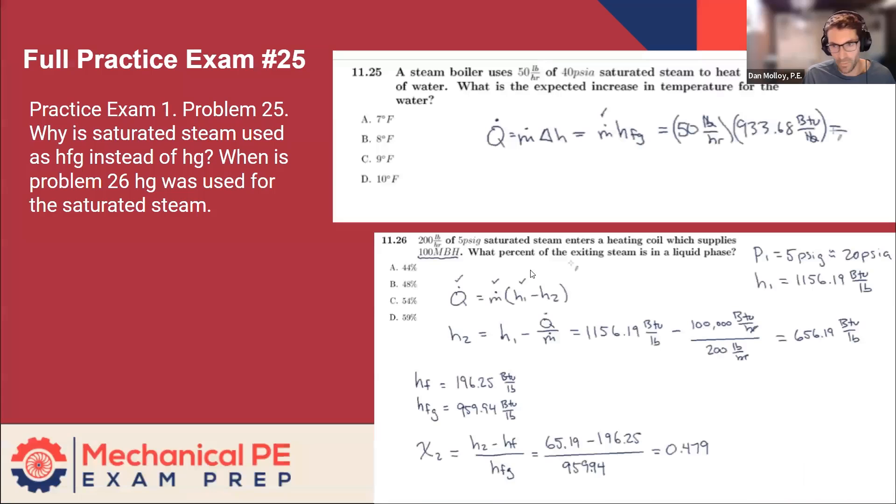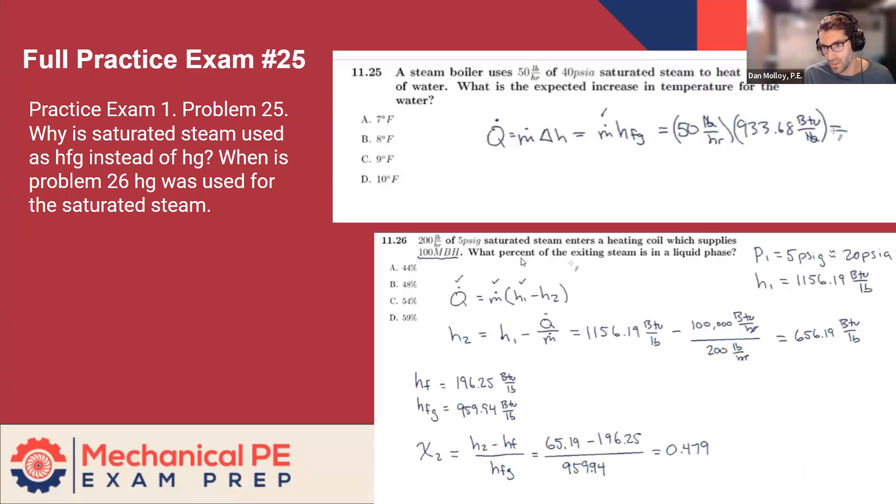So why isn't that the case in the other problem that you mentioned? The other problem is a steam heating coil. And on this one, we have a mass flow rate and a pressure, and we know the rate at which energy is being supplied. So because we know Q dot in this problem, in the first problem we didn't know Q dot. In the second problem, we did.